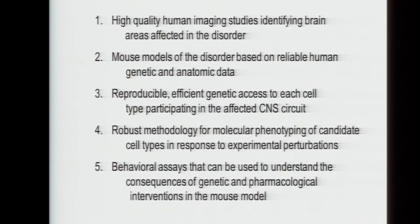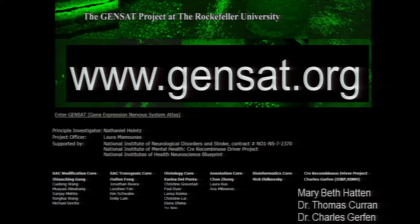What we need in order to investigate these issues is really good human imaging data that gives us an idea of what areas are affected in the disorder. We need mouse models based on human genetics so that at least we know the mutations we put into the mice are relevant. And then we need to be able to do cell-specific experimentation to determine what the properties of the cells are, what circuits they contribute to, et cetera. This requires not only the molecular biology but good behavioral assays.